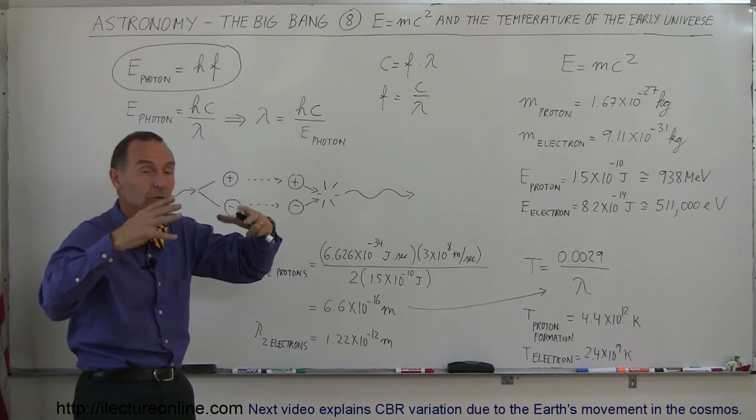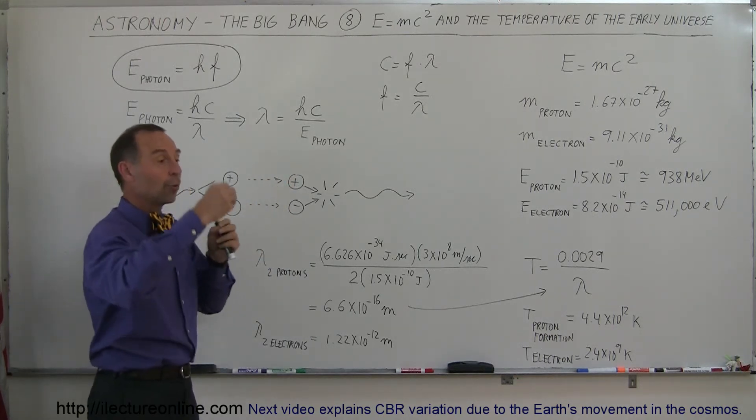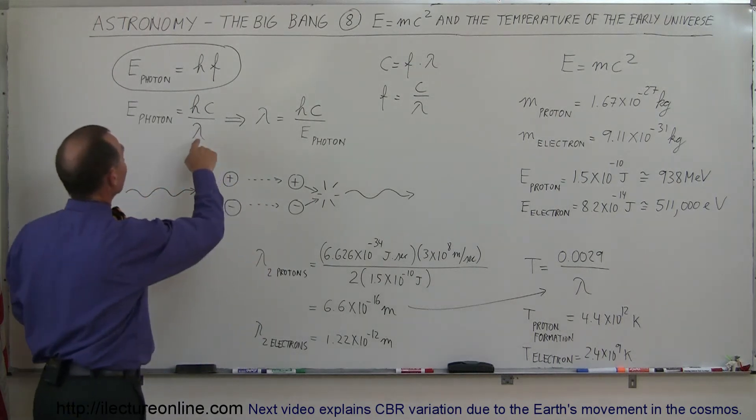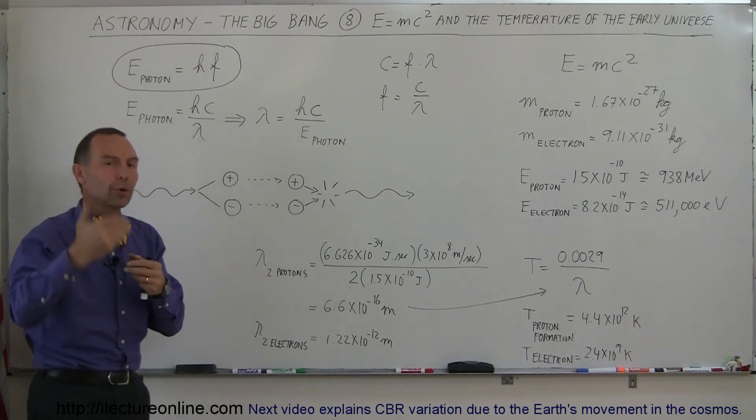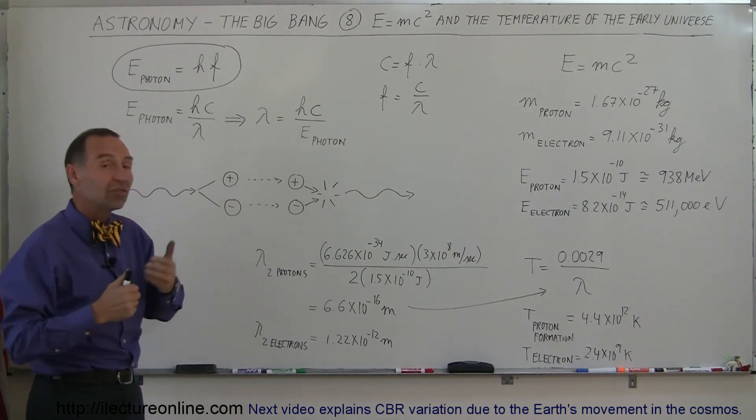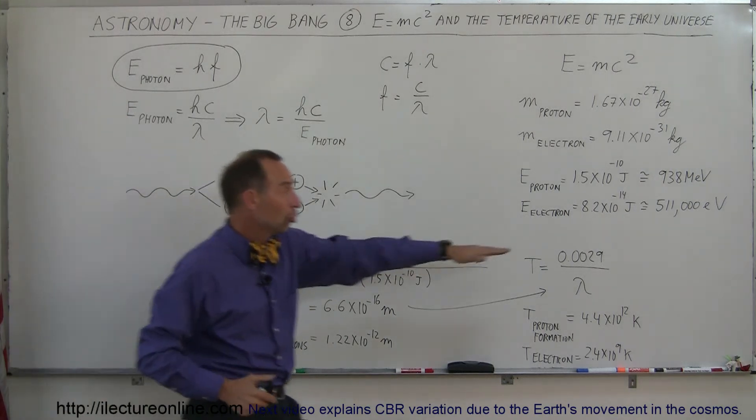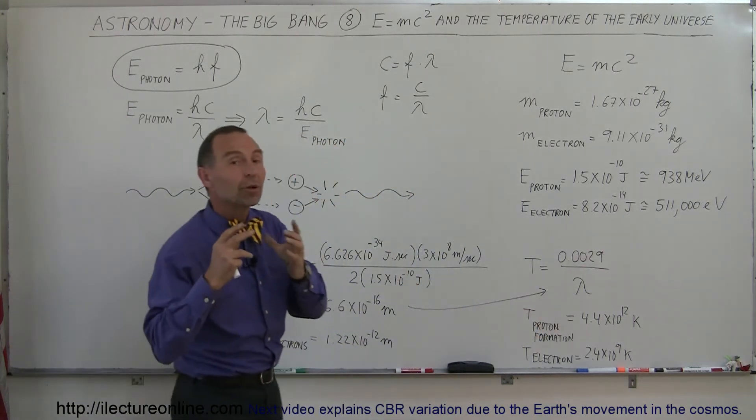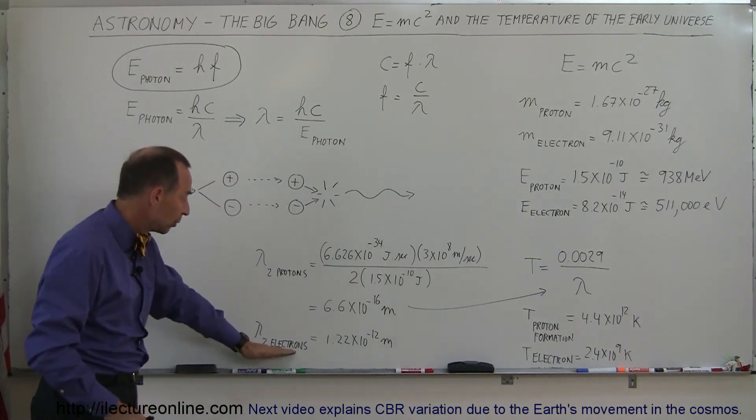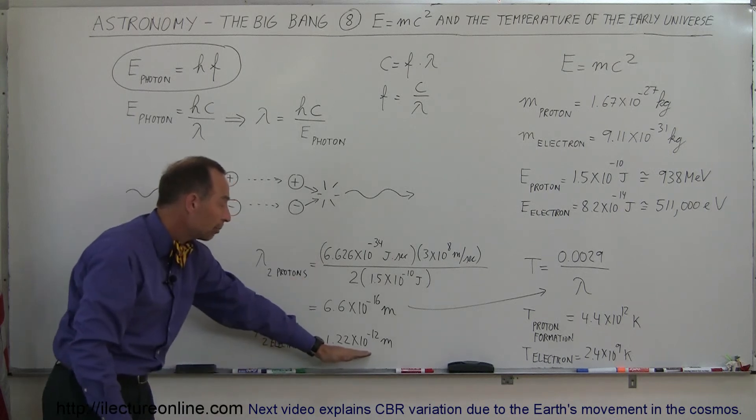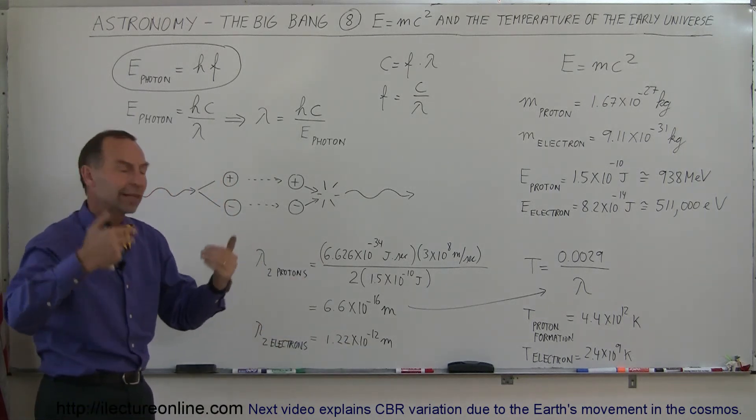Then as the universe cooled, presumably as the universe expanded, the wavelengths get longer. If the wavelength gets bigger, the energy of the photon gets smaller, and therefore it could no longer make protons and anti-protons, but it could still make electrons and anti-electrons. And so the energy required to make electrons is much lower, therefore it doesn't need as much energy in the radiation to do that. So the wavelength to make two electrons can be calculated the same way, but it's only 1.22 times 10 to the minus 12 meters, much longer wavelengths with less energy.